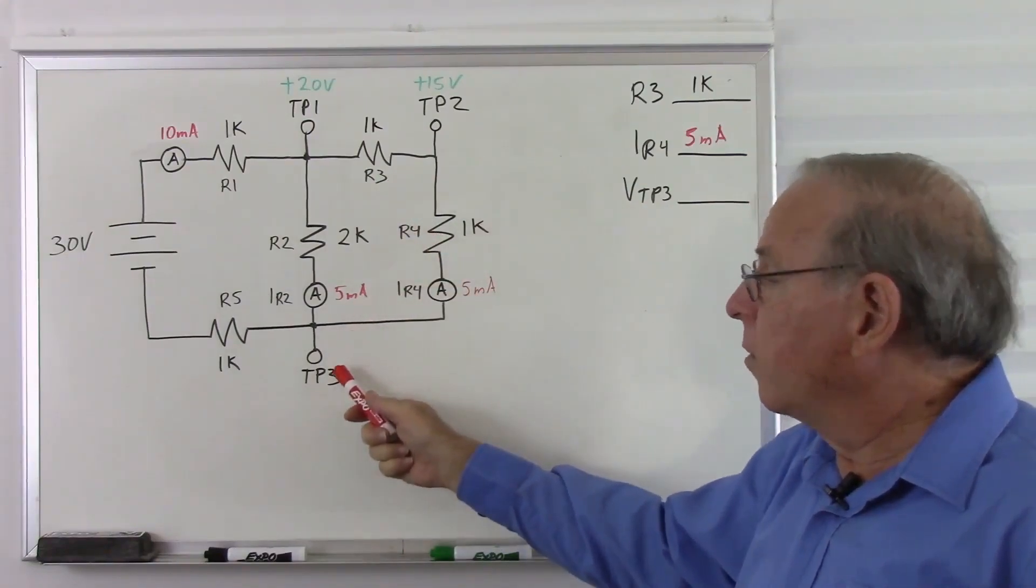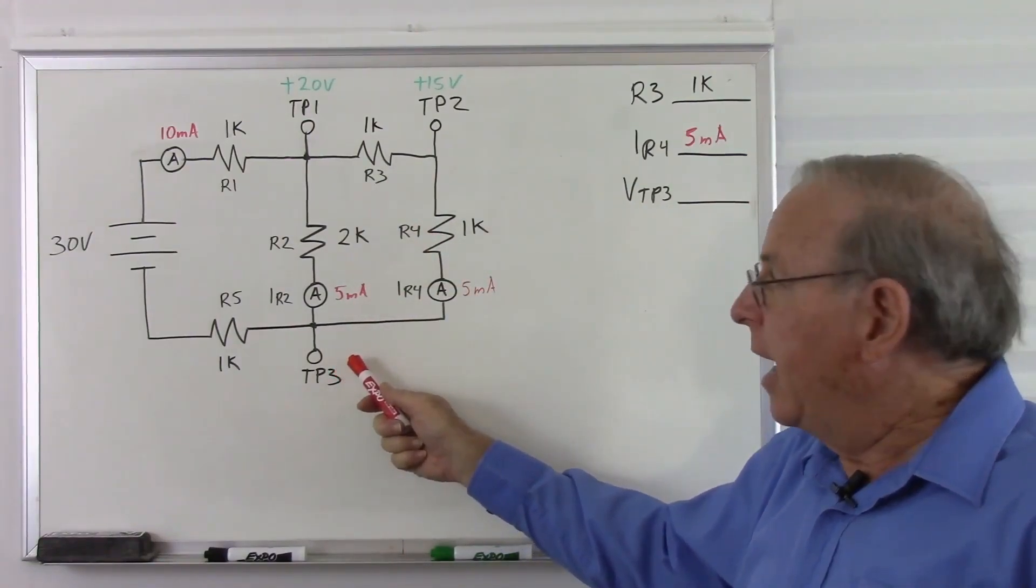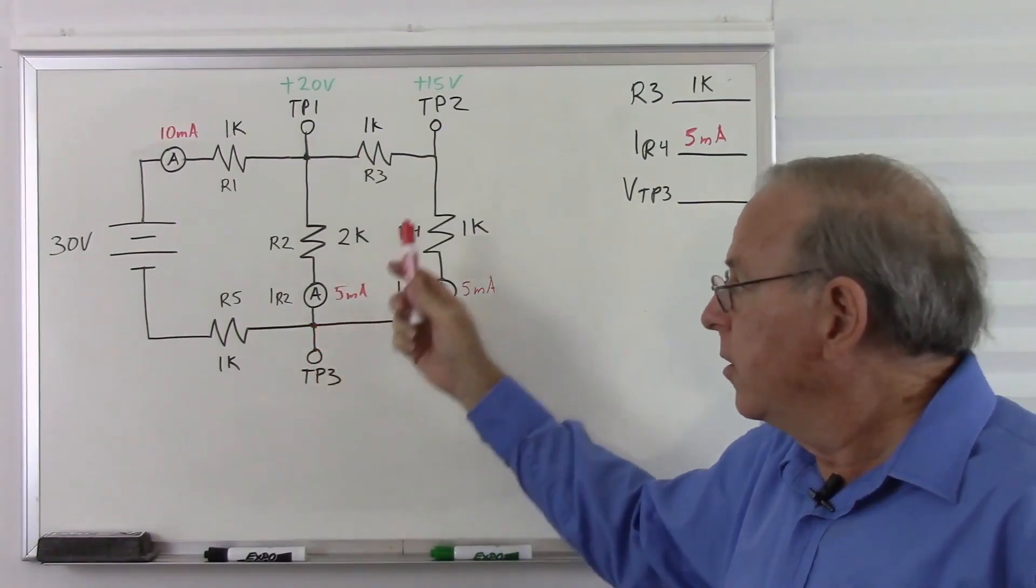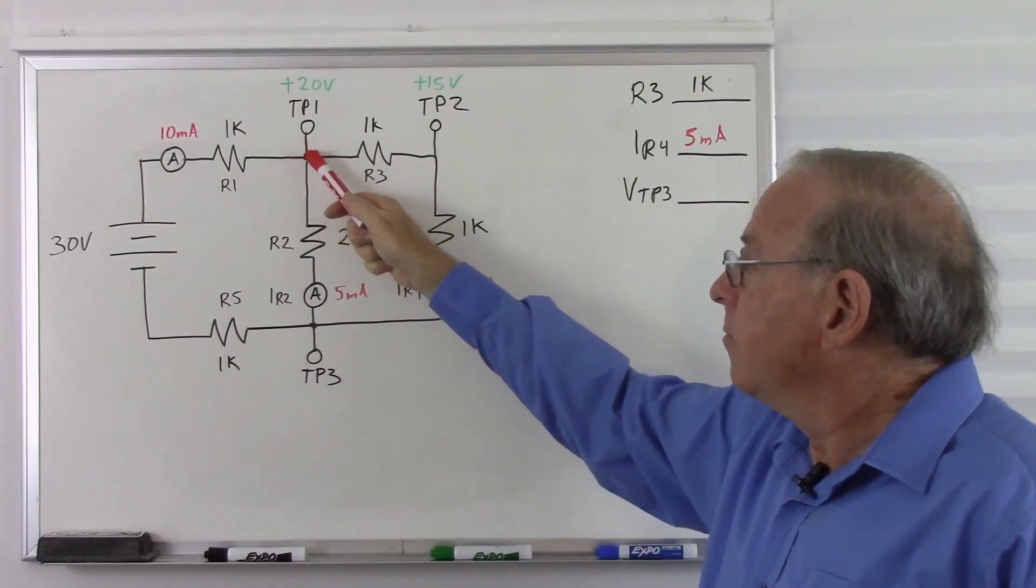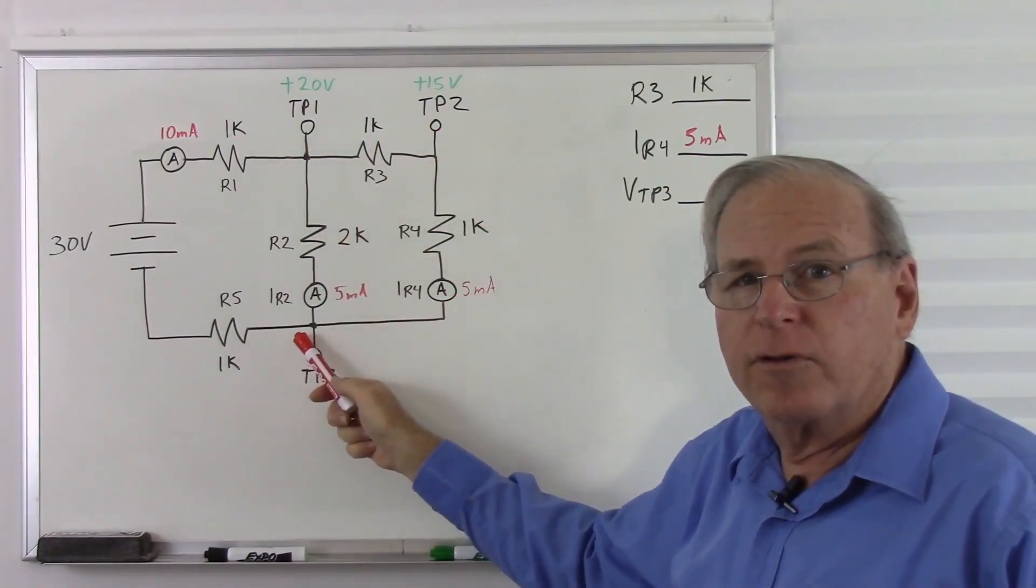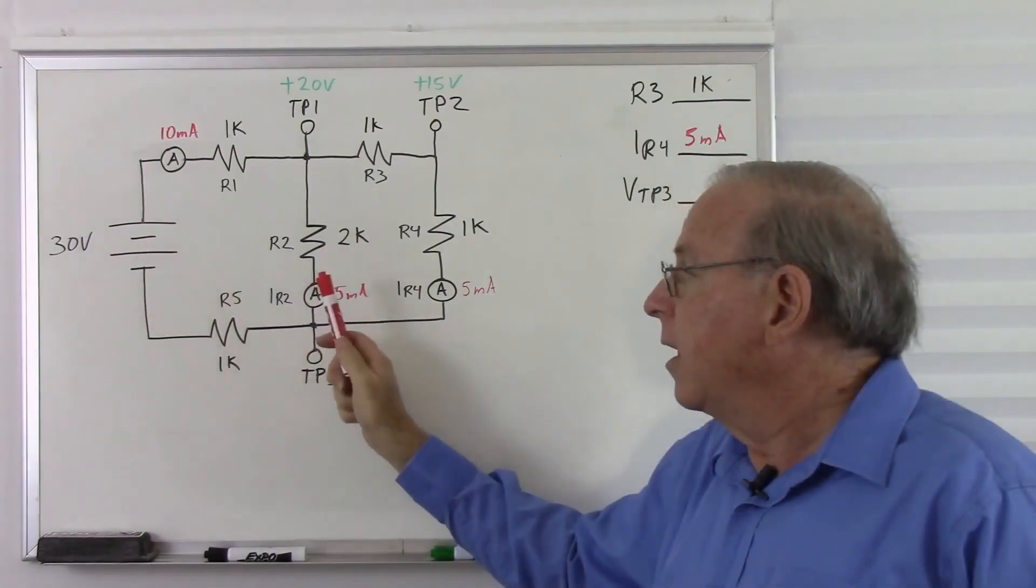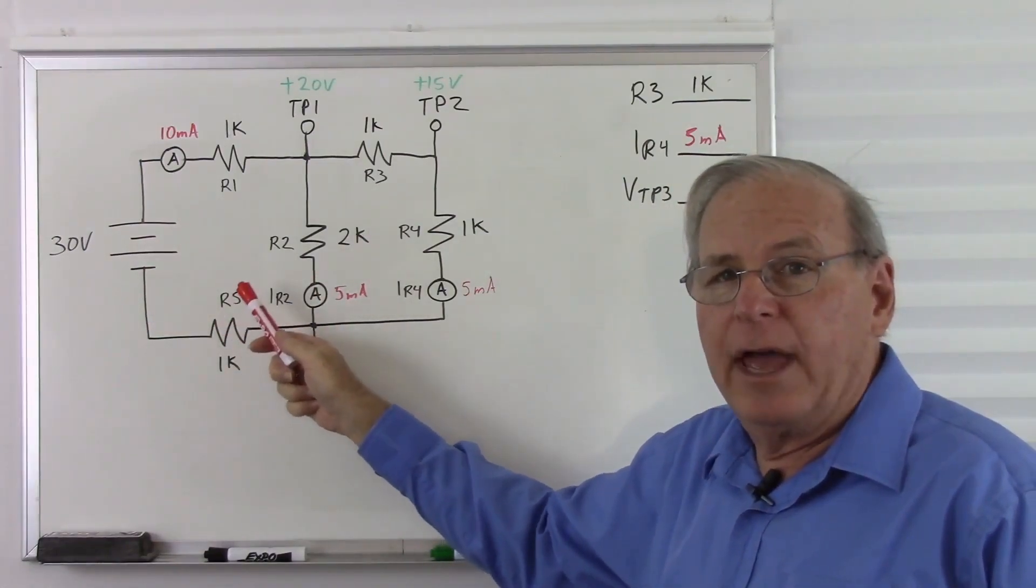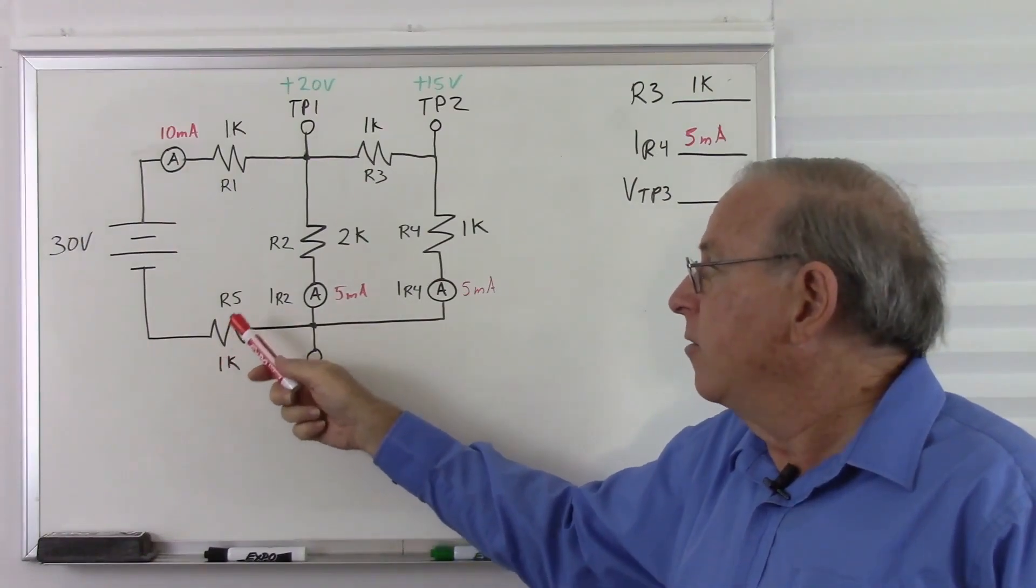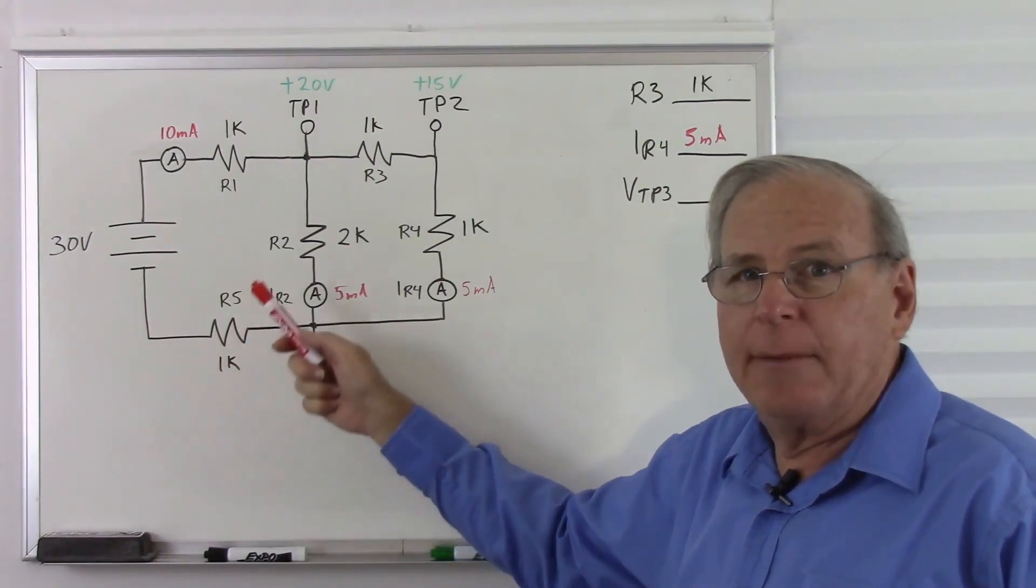Now, that leaves us with the voltage at test point 3. And I think the easiest approach here will be just to go ahead and do it with Ohm's Law. We have 10 milliamps splits up into 5 milliamps and 5 milliamps, and then comes back together, of course, for 10 milliamps back here.